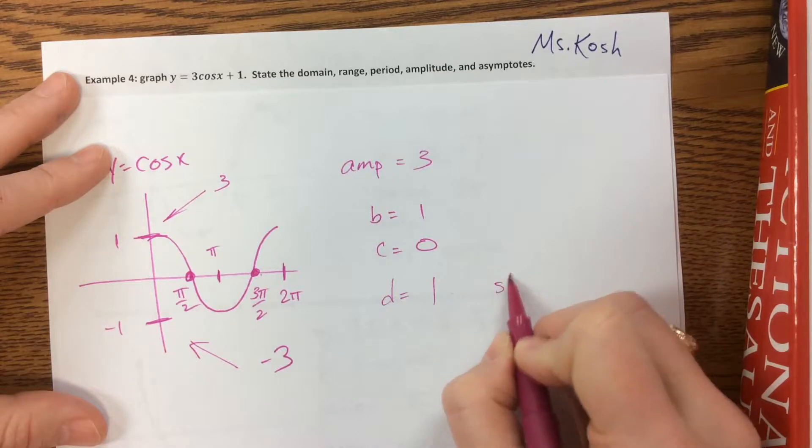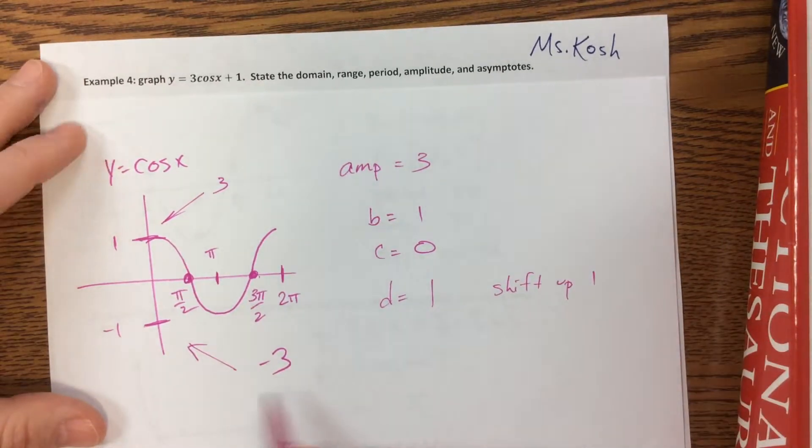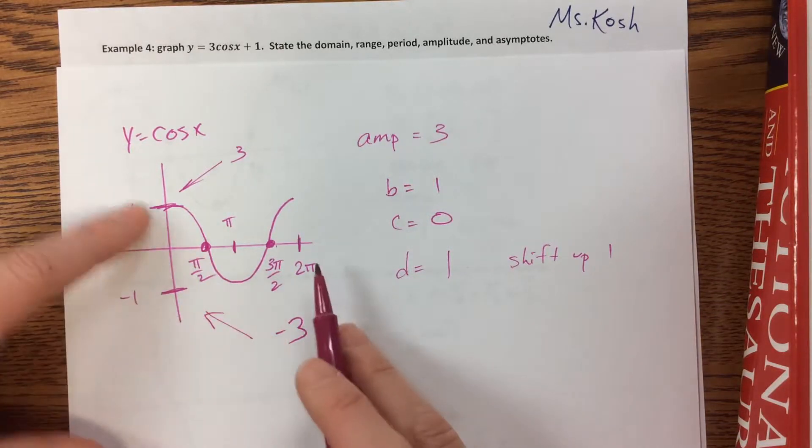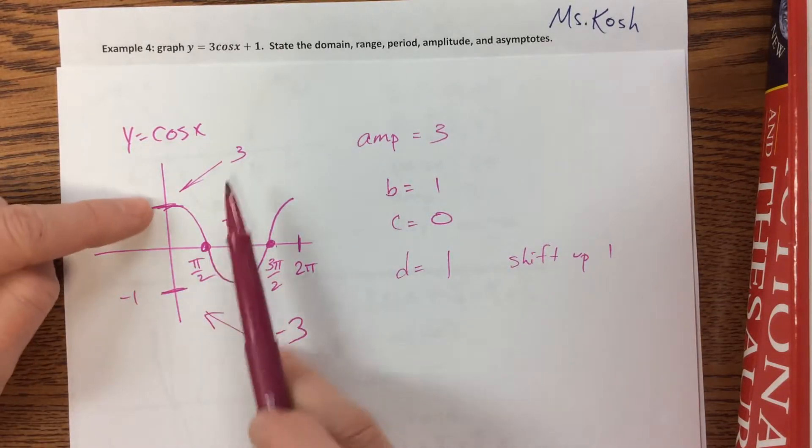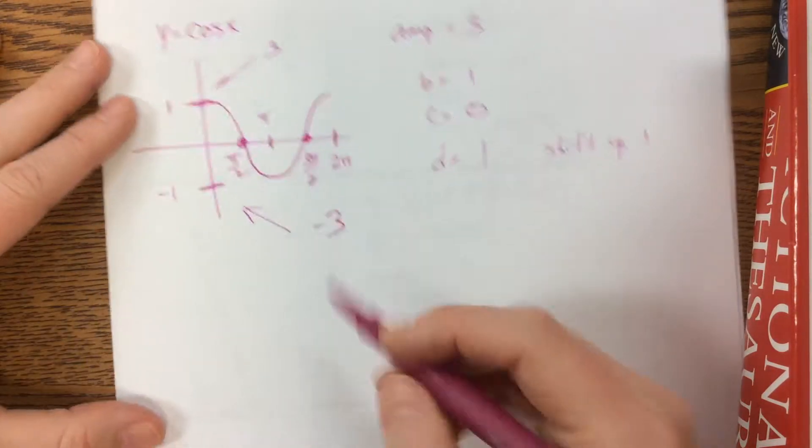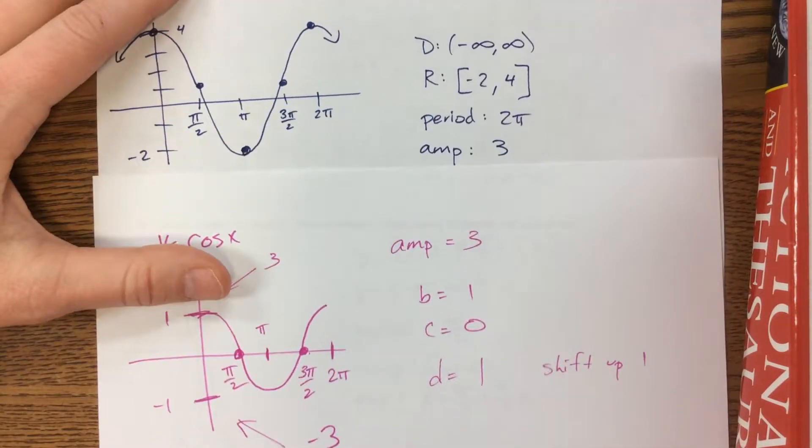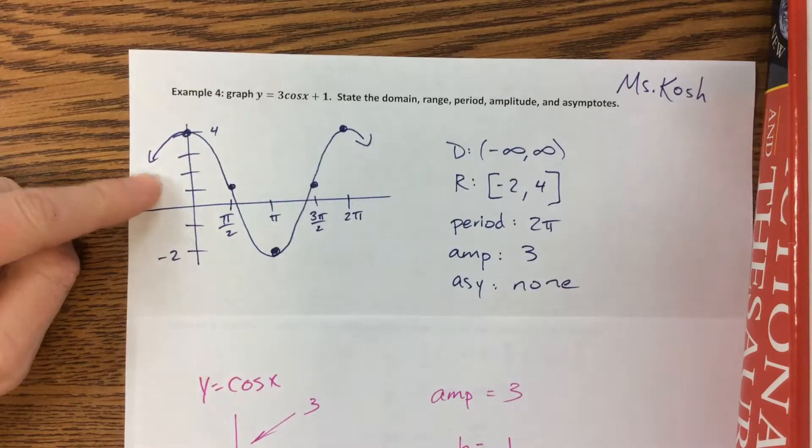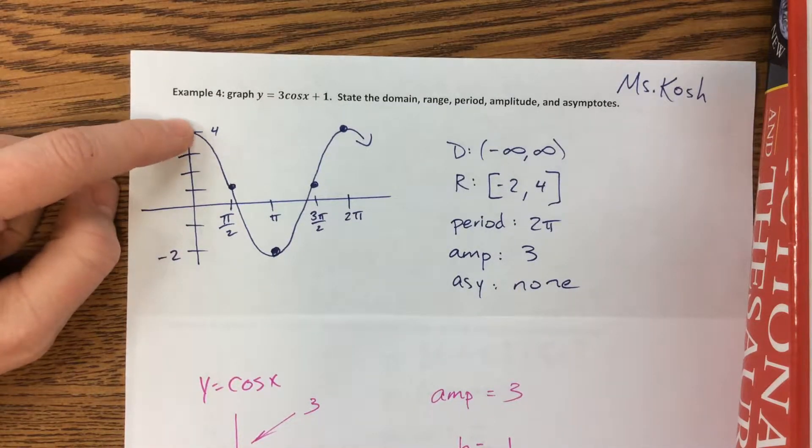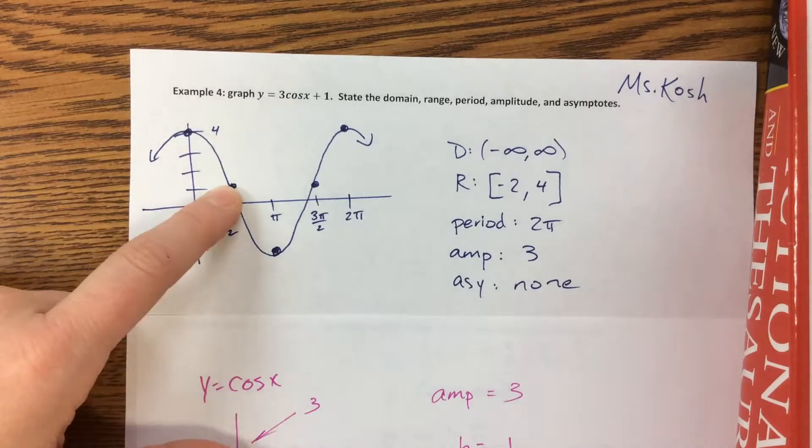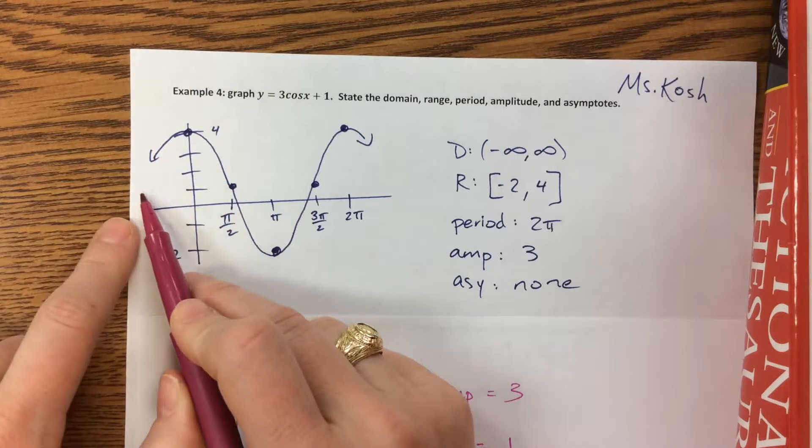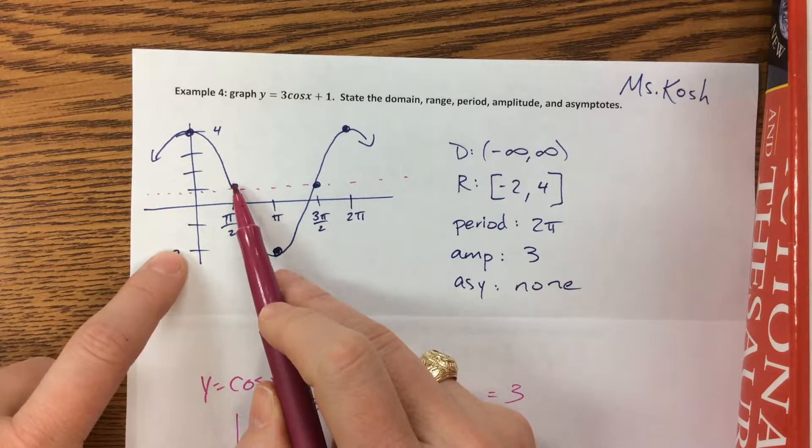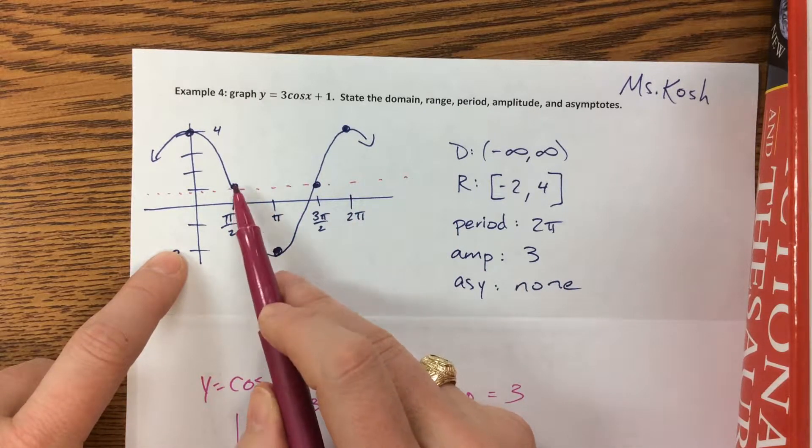So what had been negative 3 now becomes negative 2 because I have to go up 1. What was positive 3 now becomes positive 4. So the final answer looks something like this. Where I'm going as high as positive 4. I get to this midline, and you always want to, I don't draw the midline, but like these points, I often find kids will try and keep this point on the axis.